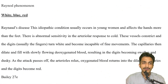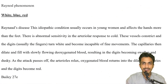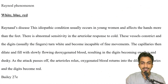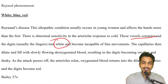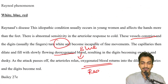Raynaud's phenomenon — very straightforward question about color changes, again taken from Bailey. I've observed that the majority of questions are asked from Bailey and Sabiston, so stick to those. Due to sensitivity to cold, vessels constrict so it becomes white; then capillary blood fills and is deoxygenated so it turns blue; then arterioles relax and oxygenated blood comes, turning it red. Answer: white, blue, then red.